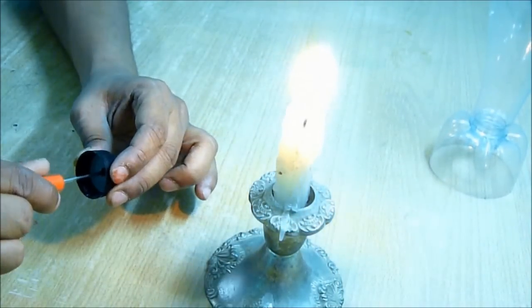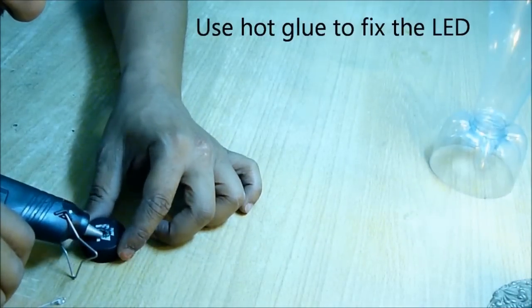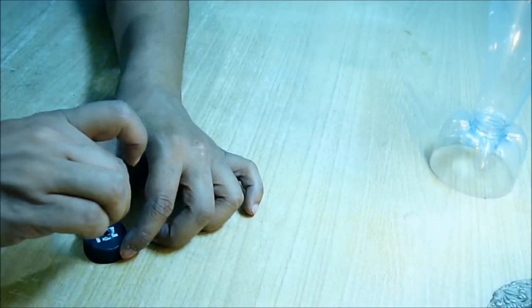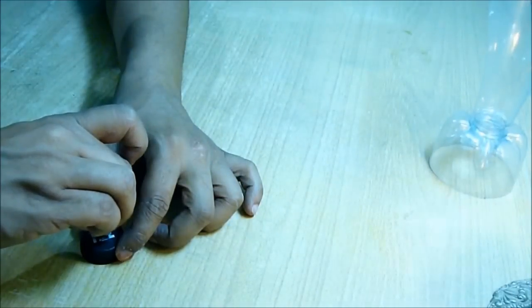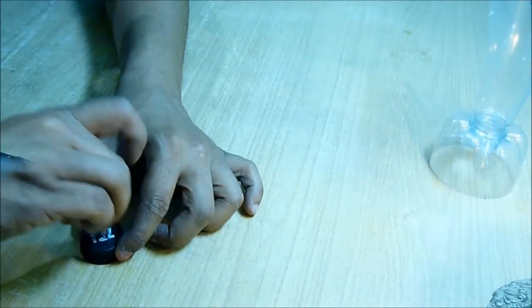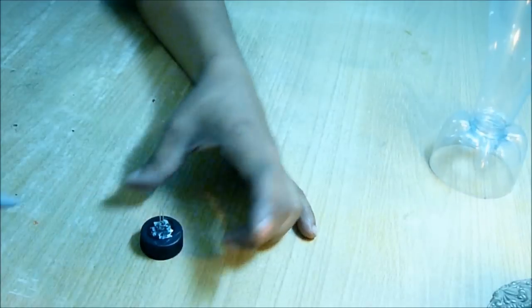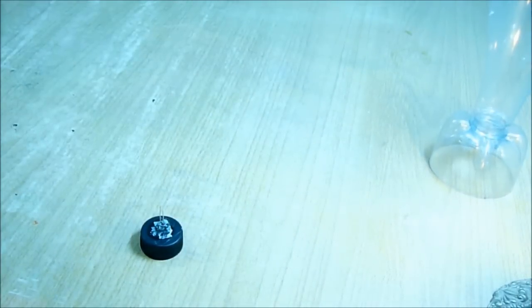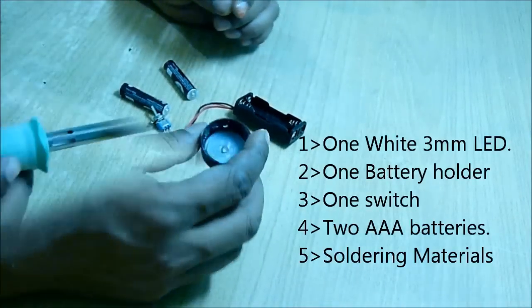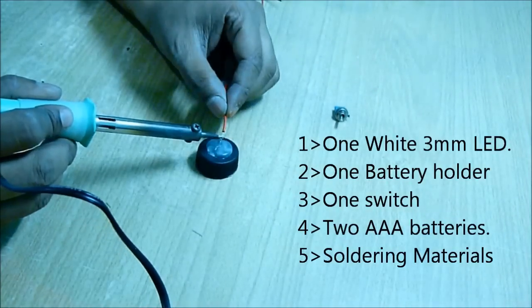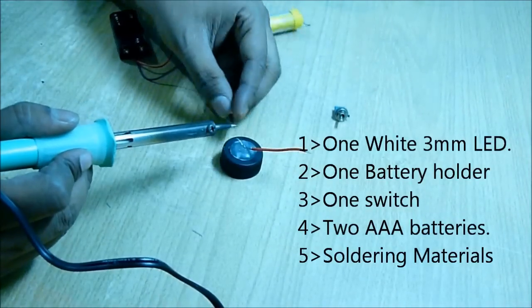We will prick a small hole with a hot needle, and using hot glue, we'll fit that LED into that small hole. To be sure that it is watertight, we have to put a lot of glue around it.